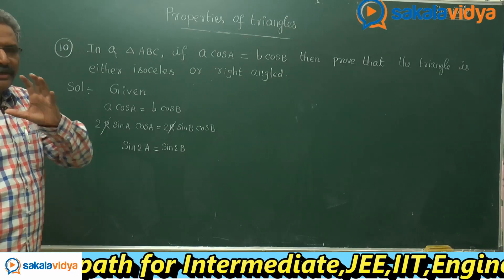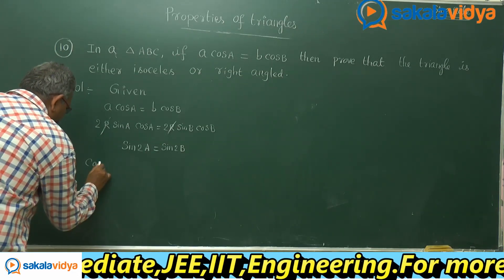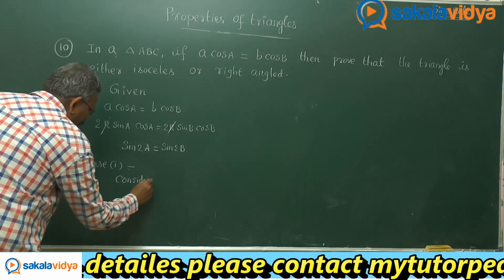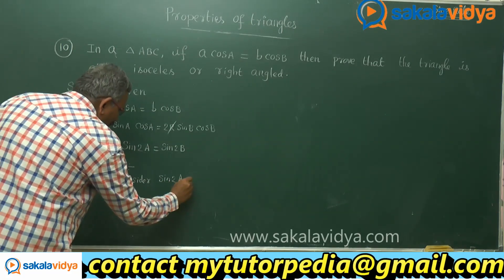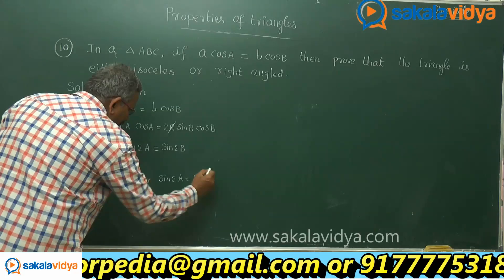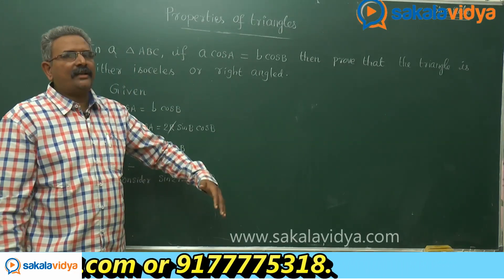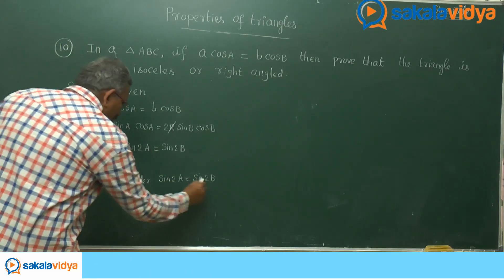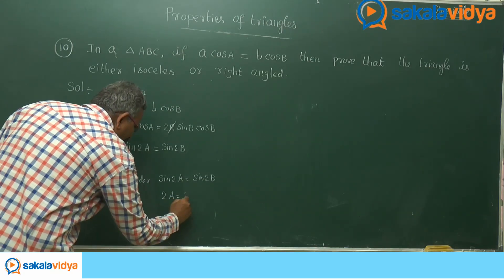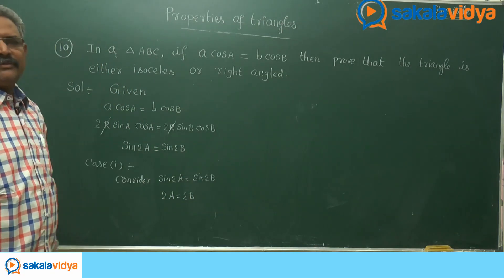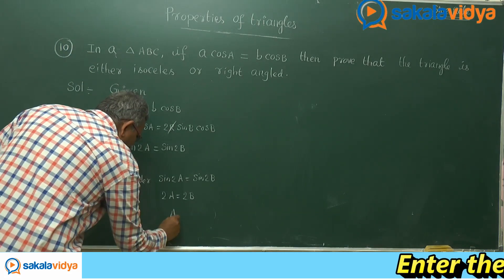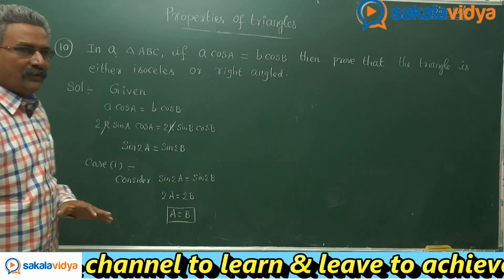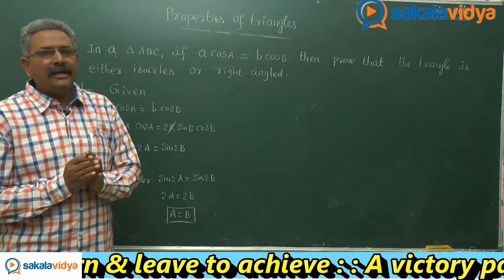Now let us consider two cases. Case 1: consider sin2A equals sin2B. Since sinθ equals sinα implies θ equals α, we can write 2A equals 2B. Dividing both sides by 2, we get A equals B. That means two angles are equal in triangle ABC.